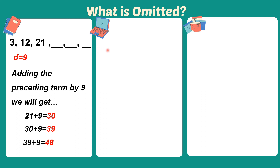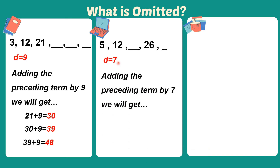Next, let's have the second example. We have 5, 12, blank, 26, and blank. Since ito ay arithmetic sequence, hanapin natin ang common difference from the consecutive terms available: 12 minus 5 is equal to 7. So 7 ang ating common difference. Nag-a-add tayo ng 7 para makuha yung susunod na term. 12 plus 7 is equal to 19, so 19 ang number sa unang blank. At 26 plus 7 is equal to 33, so 33 ang number after ng 26.